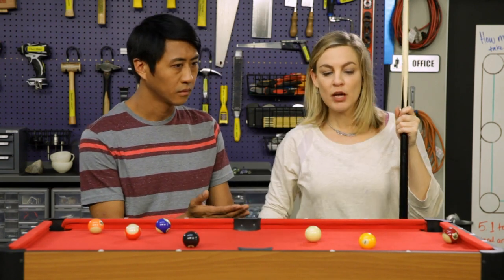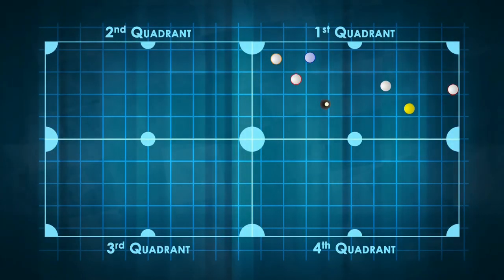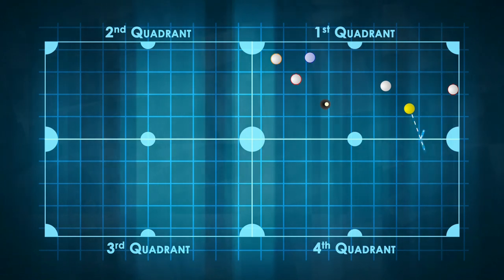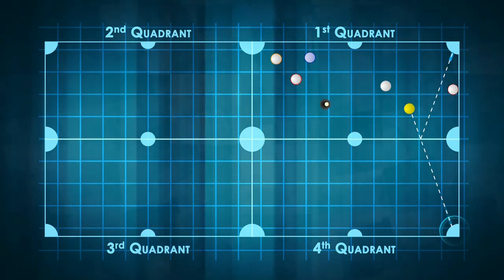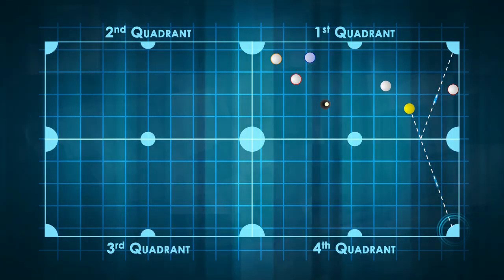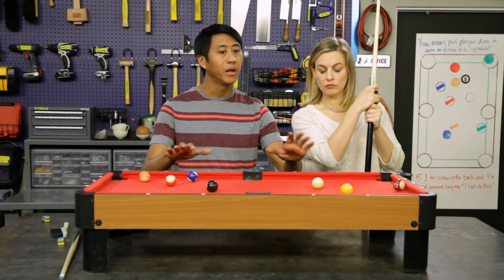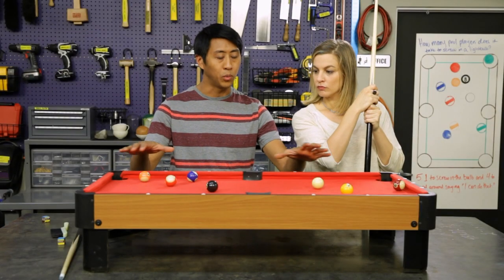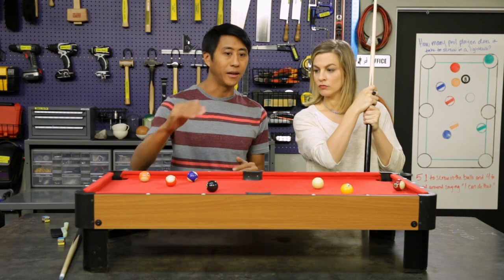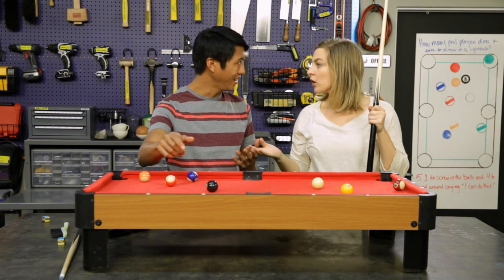So if you can imagine a reflection of the pool table on the other side, you're going to continue hitting the ball straight without reflecting. So you're really aiming for the pocket on the reflected pool table. If we think of the pool table as the first quadrant of a coordinate plane, then the reflected table is the fourth quadrant. Yeah, that works.